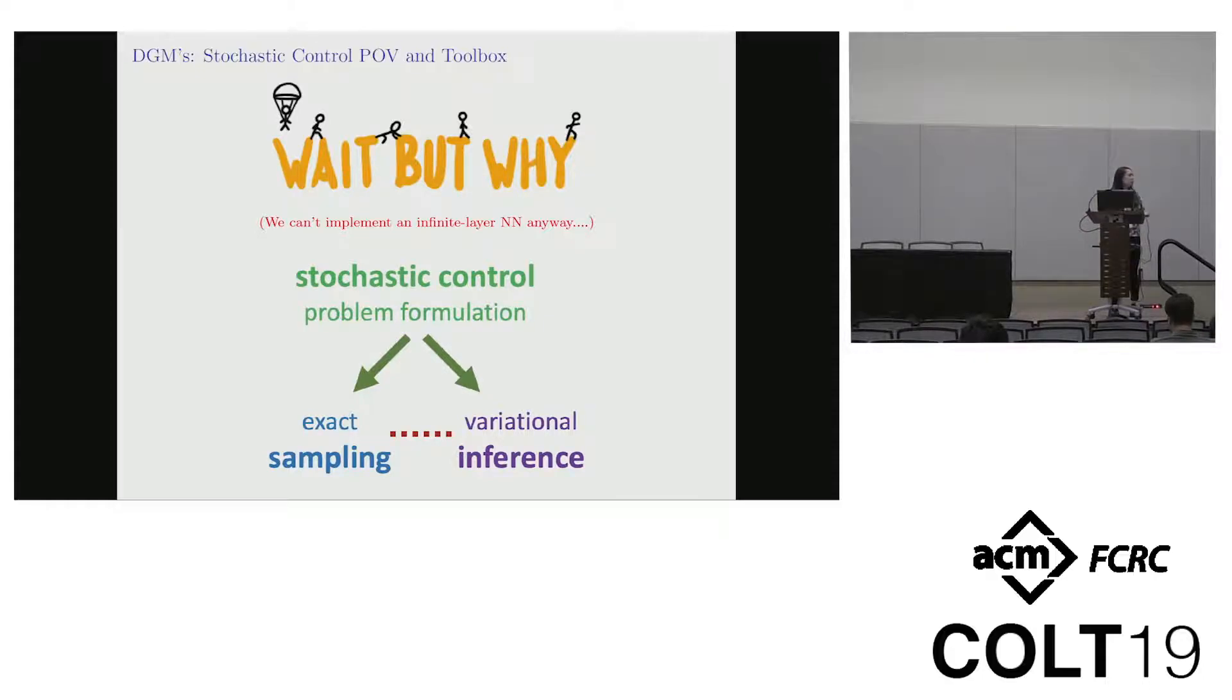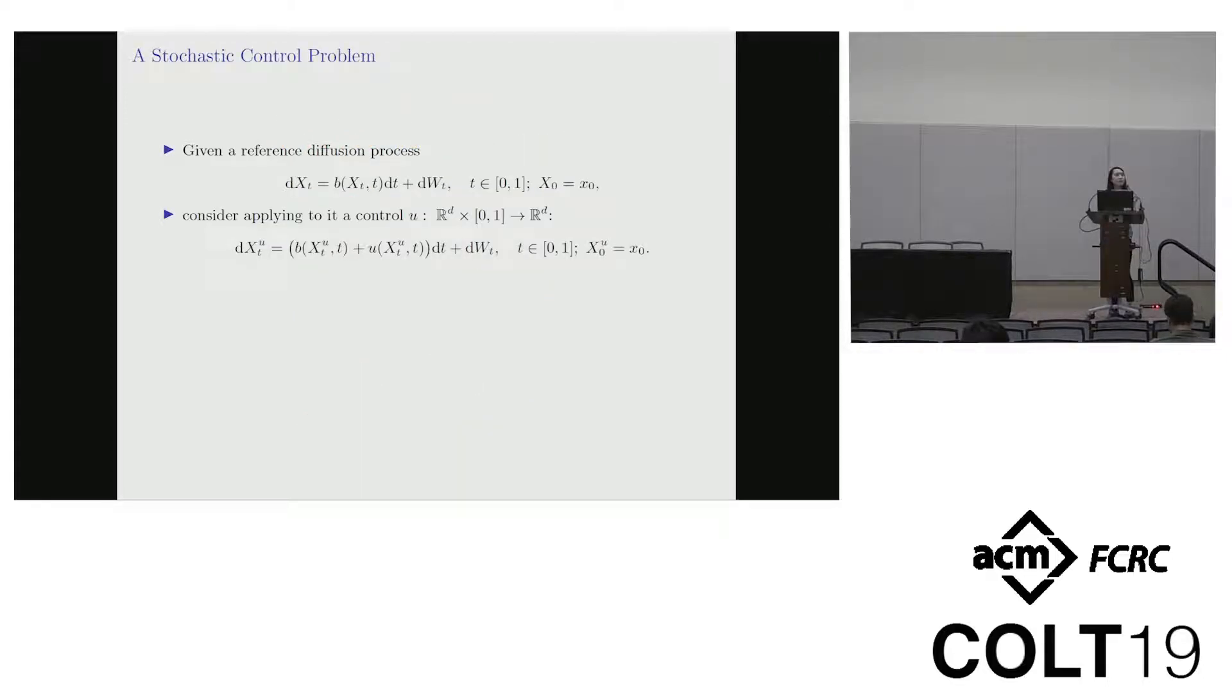We contend that continuous time is really nice and useful because it enables the stochastic control problem formulation that gives us a unified view of both exact sampling, which is hard to do in general, and variational inference, which we can do in most cases if we choose our class tractably. To look at this control theoretically, if we have some reference diffusion process with arbitrary drift and constant diffusion coefficient over a finite time interval, say 0 to 1, apply to it a control so that we get this sort of controlled analog where everything is the same but with the drift term adjusted.